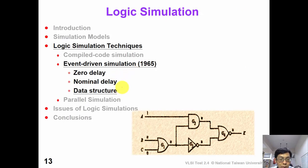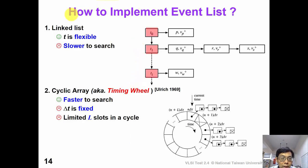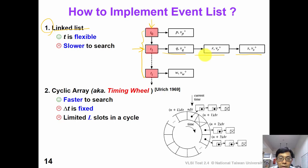Now finally, let's talk about the data structure. There are two ways to implement data structure for event list. The first one is a linked list data structure. We link the events according to their timestamp. For the same timestamp T1, we can have a linked list of events. In this data structure, the timestamp is flexible, so we can insert an arbitrary timestamp in between two neighbor timestamps. However, the problem is that if we want to search for a particular timestamp, it takes a while to search.